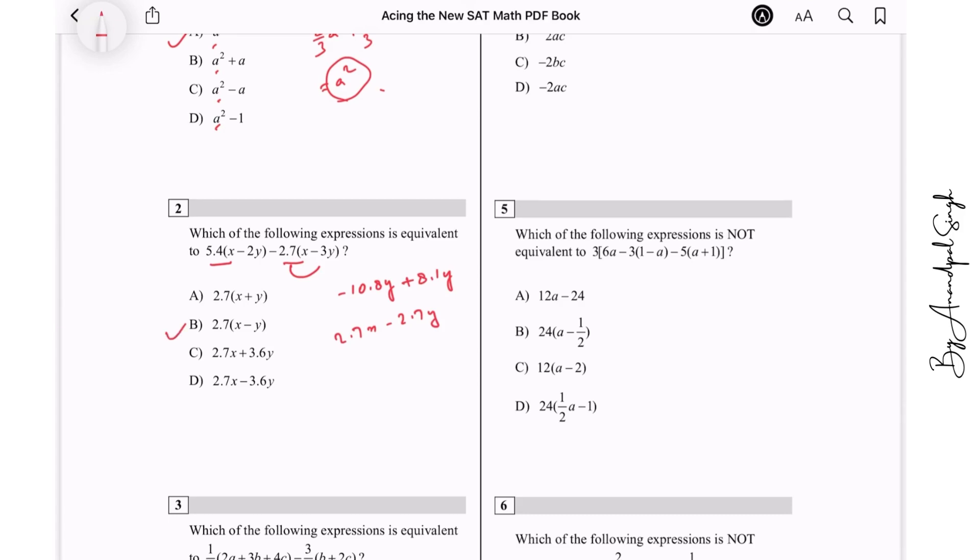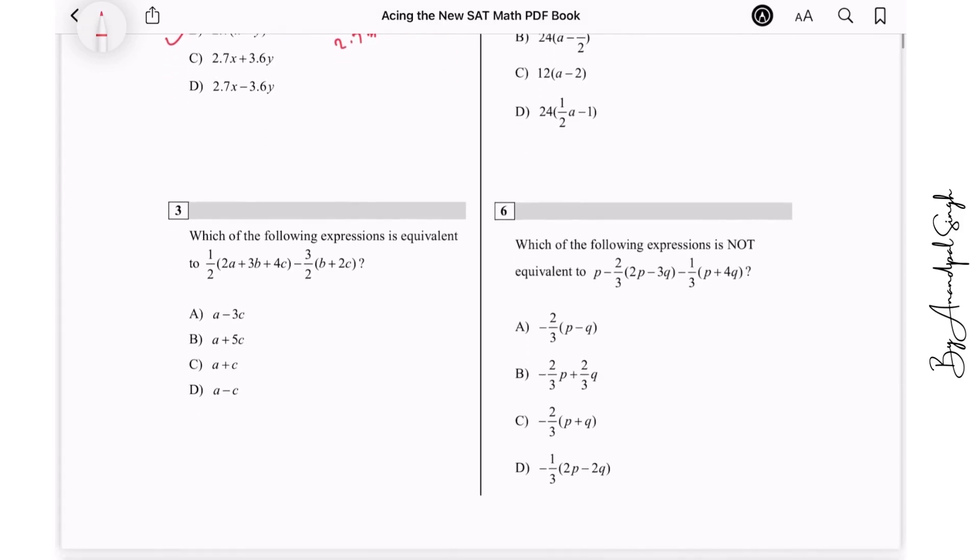Let us go to question number three. Which of the following expression is equivalent to this? See here, it is 1/2 of 2a, that is a. And then there is no a in the second term, okay, so a is already there. Then it is 3/2 b and minus 3/2 b, so b cancels out. And then we get 2c and minus 3c, I think that will be a minus c. So a - c is option number D.